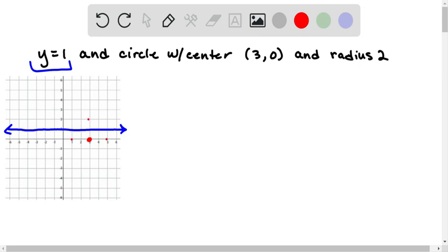So from the center, up 2, right 2, left 2, and down 2. And we're looking for the points of intersection of that line and circle, so we're looking for the coordinates of these two points.